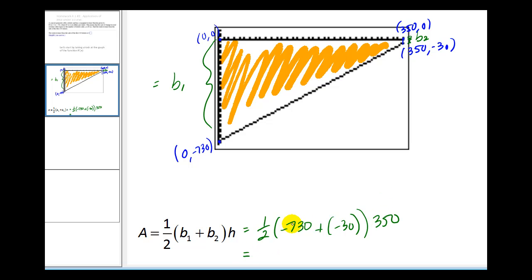So to find our area here, or think of it as signed area, we'd have one-half times (-730 + (-30)) times 350, which equals negative 133,000.